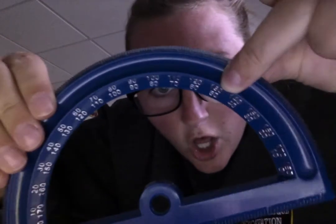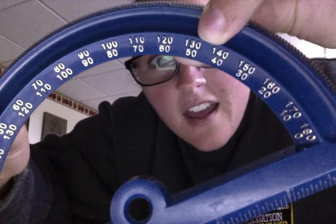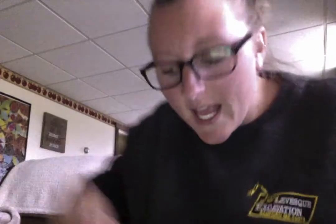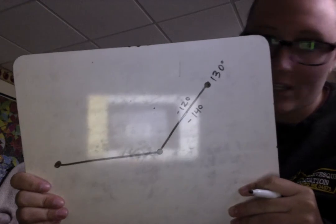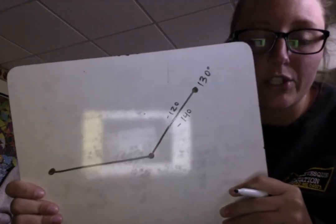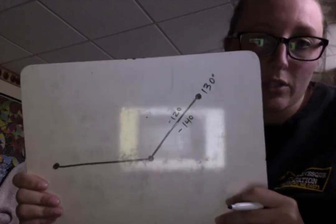It is super important that you use the correct scale of inner and outer though because this 130 also says 50, I don't know if you can see that. Okay and I know by looking at this angle that this is not a 50 degree angle because a 50 degree angle is acute and this angle is obtuse. So that's why we needed to learn what scale to use, inner and outer, because you need to know how to read the protractor.